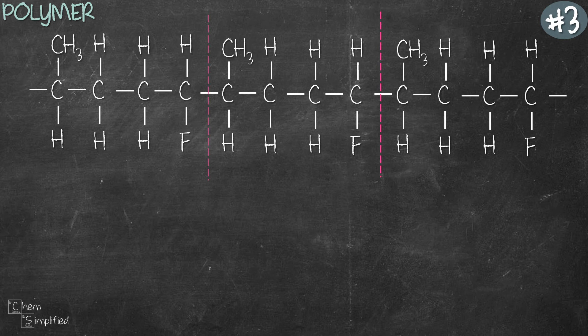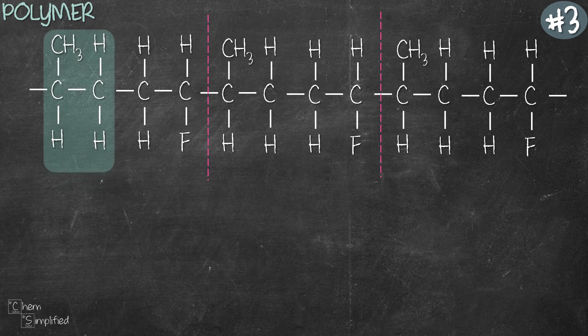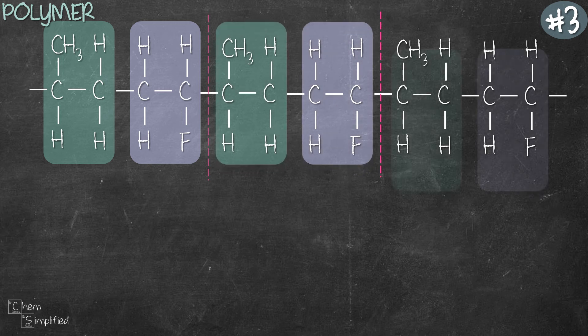Alright, so if this is a copolymer, then there must be at least two different monomers in the repeating unit. And in fact there it is. Looks like the pattern is one to one. We have green, purple, green, purple, green, purple.